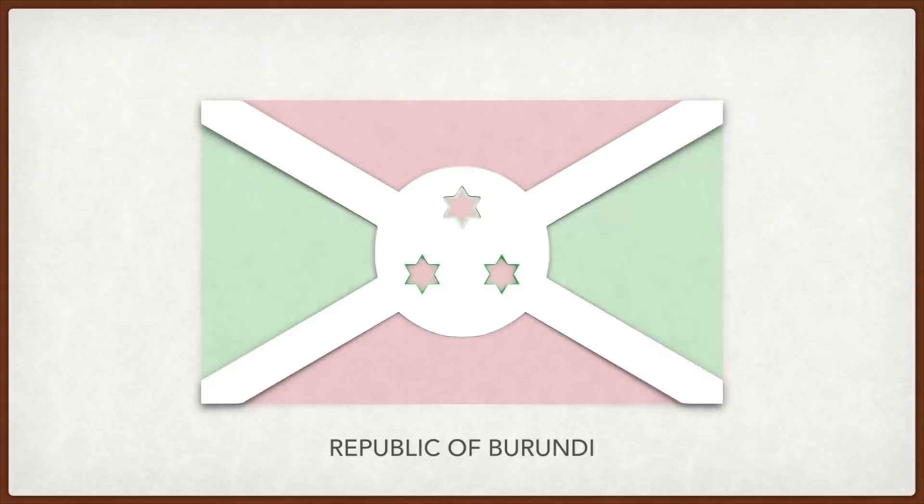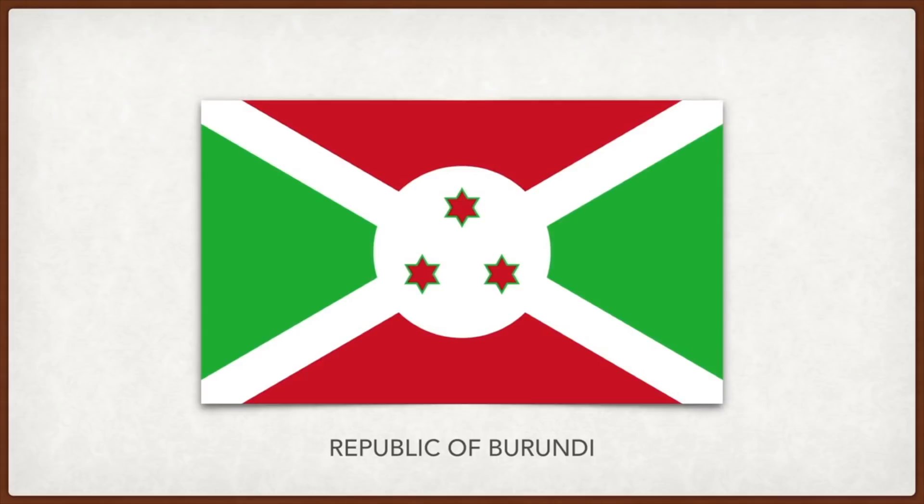Burundi: the white represents peace, the green the nation's hope for future development, and red is for the suffering during the struggle for freedom. The three stars stand for the three major ethnic groups in the country and for unity, work, and progress.